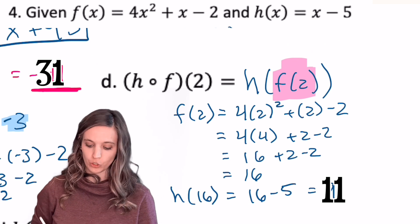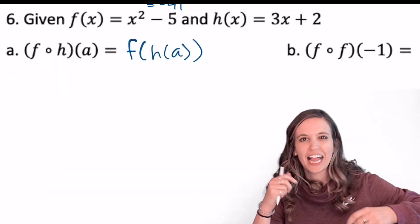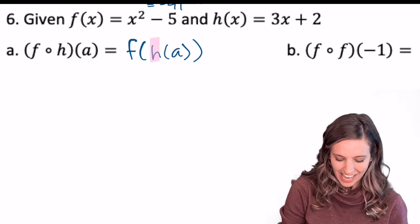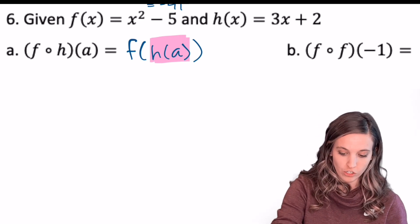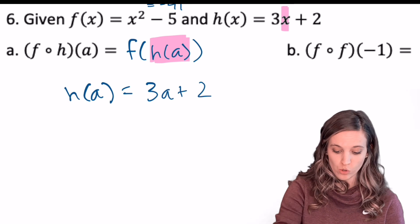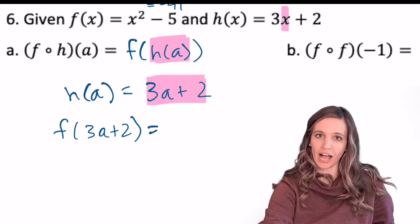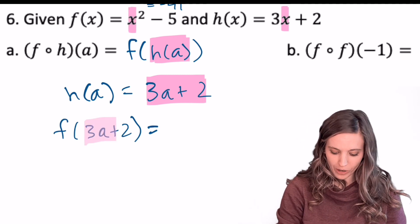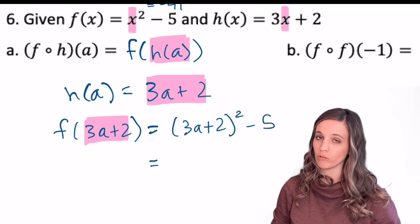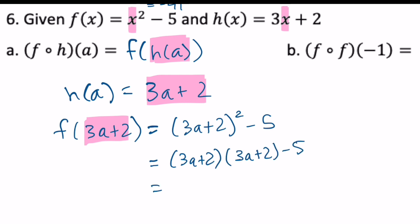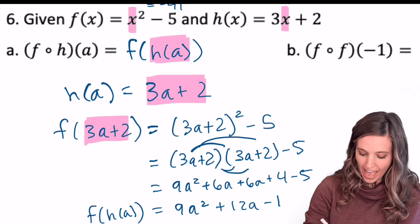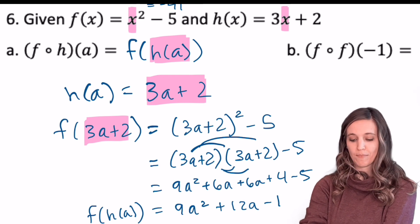Moving to example 6 with two new functions. For f of h of a, the input function is h of a — replacing x with a gives h of a equals 3a plus 2. Now input that into f, replacing x with 3a plus 2: we get 3a plus 2 quantity squared minus 5. Expand carefully — square the binomial first — and we get f of h of a equals 9a squared plus 12a minus 1.